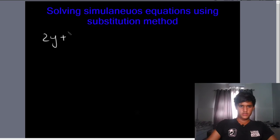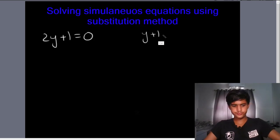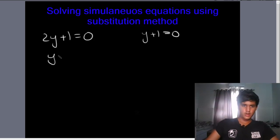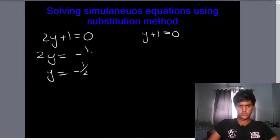We have separated into two equations: 2y + 1 = 0 and y + 1 = 0. From 2y + 1 = 0, we get y = minus 1/2. From y + 1 = 0, we get y = minus 1.